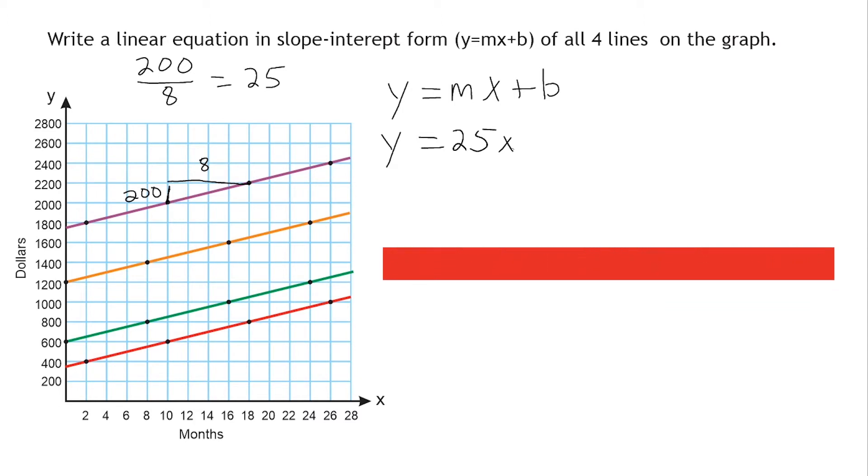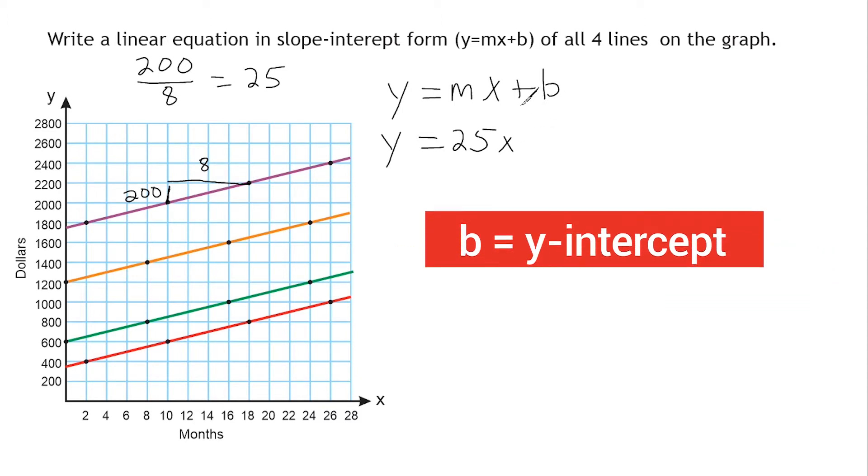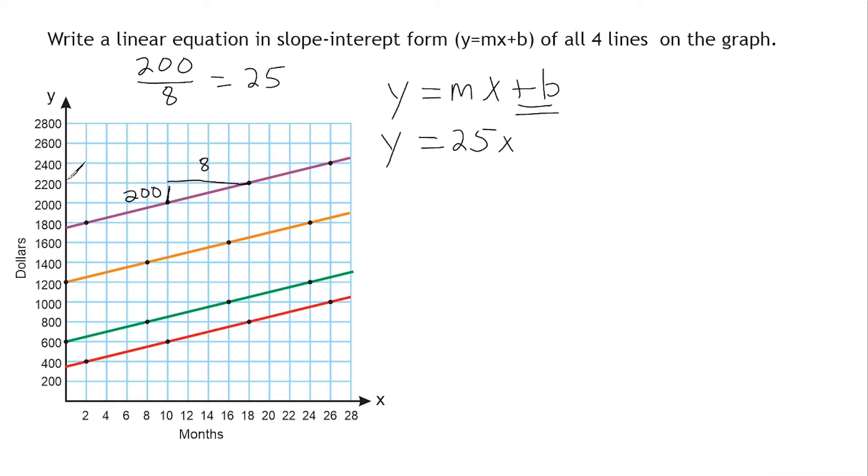All right, now what we have to do is figure out what our y-intercept is. That's what b is equal to in this equation. Where does our line cross or intersect our y-axis? Now, we can't tell by looking at it. We can see that it is a bit below 1,800.